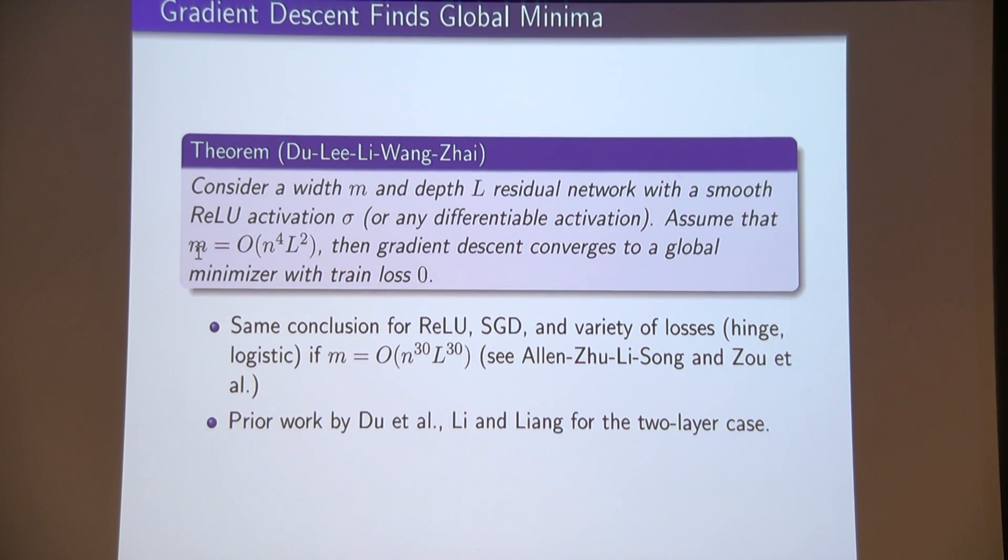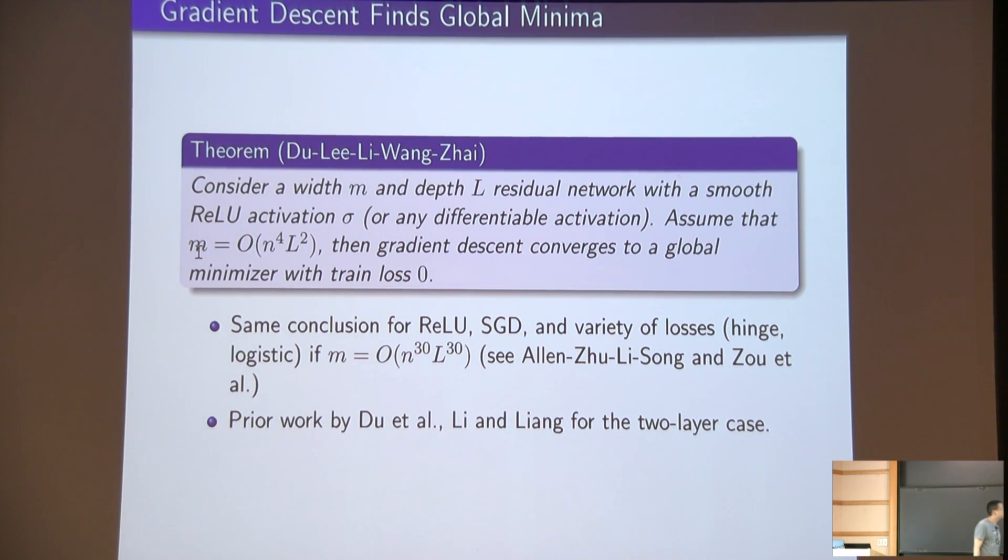Here's a theorem with my collaborators that we proved about ResNets and also feed-forward: if you have a depth L residual network with some smooth activation, differentiable, if you're sufficiently wide, then you converge to a global minimum with training loss zero. This says nothing about the test loss. It's just saying that on a non-convex optimization problem, gradient descent from simply a random initialization, all it sees is gradients, local information, and somehow it can get the global minimum to zero. It can find a point of training loss zero. Zero is a global minimum. The loss is lower bounded at zero. The global mins are not unique, and that's crucial.